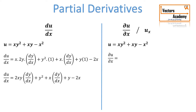So taking the partial derivative of u with respect to x: y squared is a constant term, so it remains as is and the derivative of x is 1. Similarly, y is constant so derivative of x is again 1, and the derivative of x squared is 2x. Therefore the partial derivative of u with respect to x is y squared plus y minus 2x. Partial derivative simply means the other variables apart from x are treated as constant.